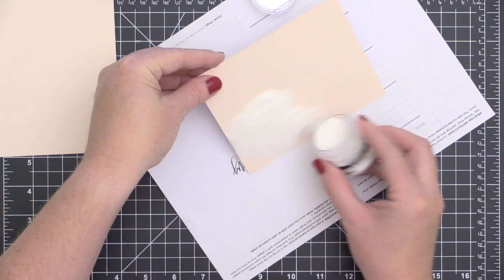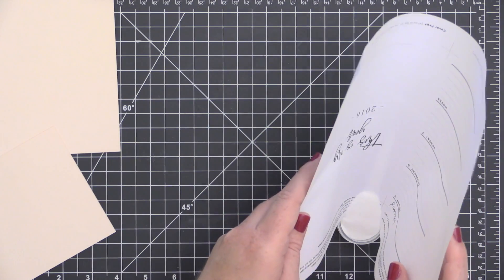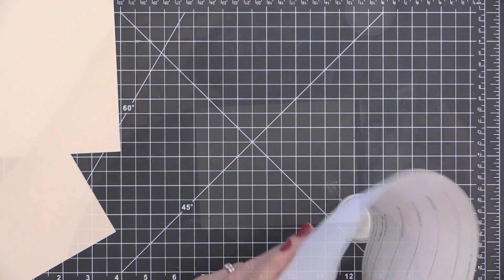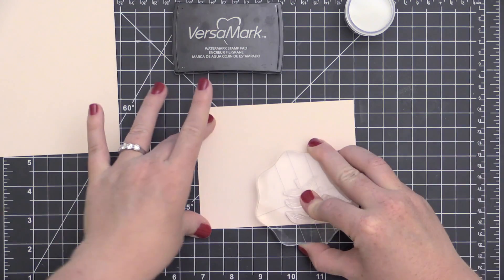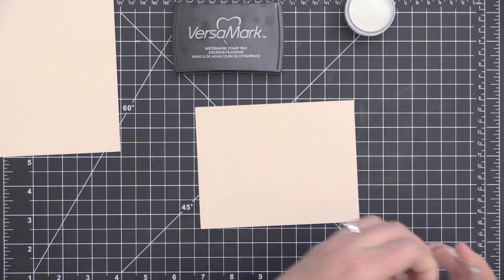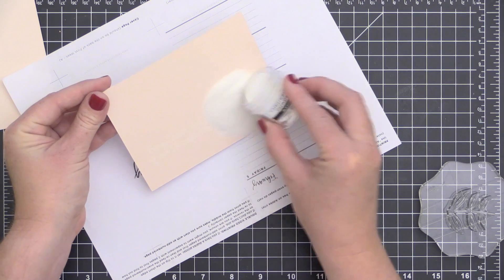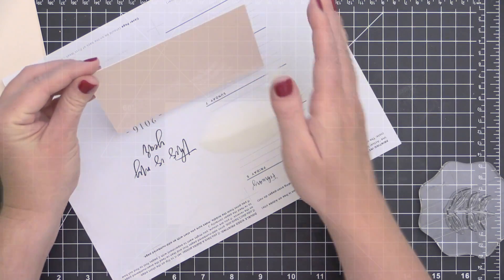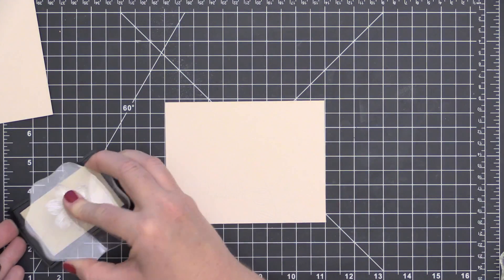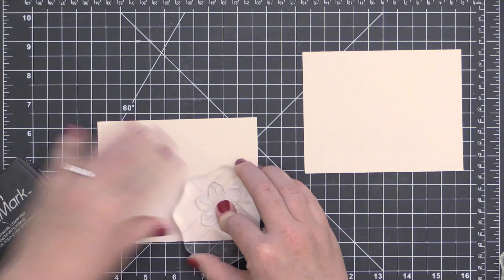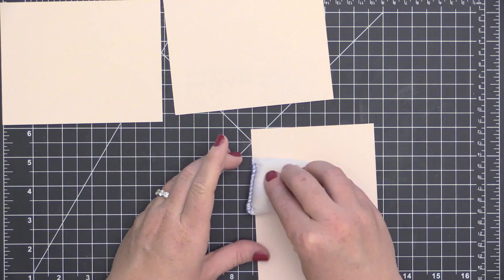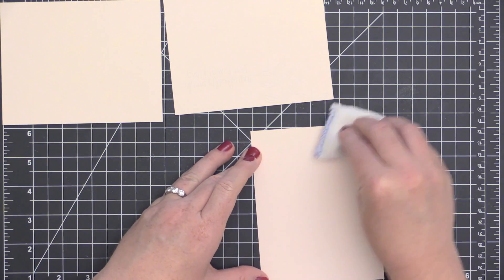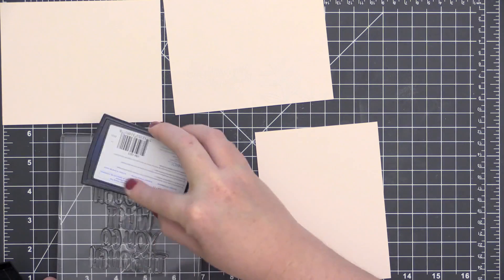This is where the magic comes in. I'm going to use a little bit of the Ranger sticky embossing powder and sprinkle it all over that sentiment. Before I heat set that, I'm going to finish stamping the rest of my scene, and as I go along, I'm going to coat the stamped images with that embossing powder so that I can see them and know where I need to stamp my next image. On this other piece, I'm going to stamp a couple of standalone images, a couple of flowers, and coat those with the sticky embossing powder.